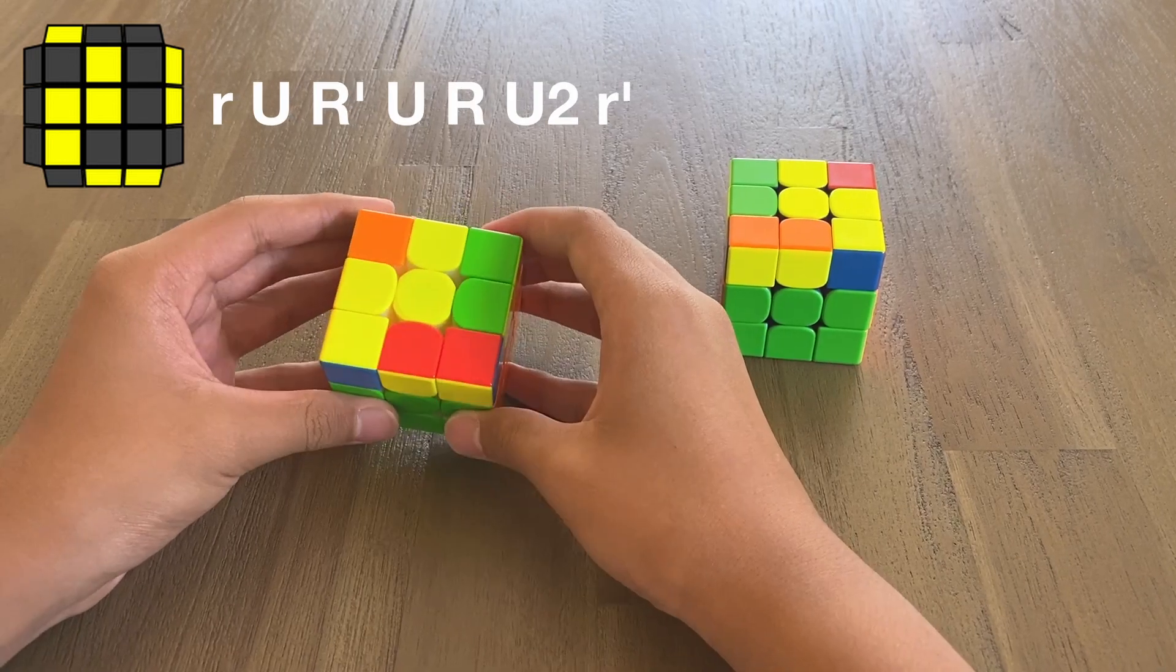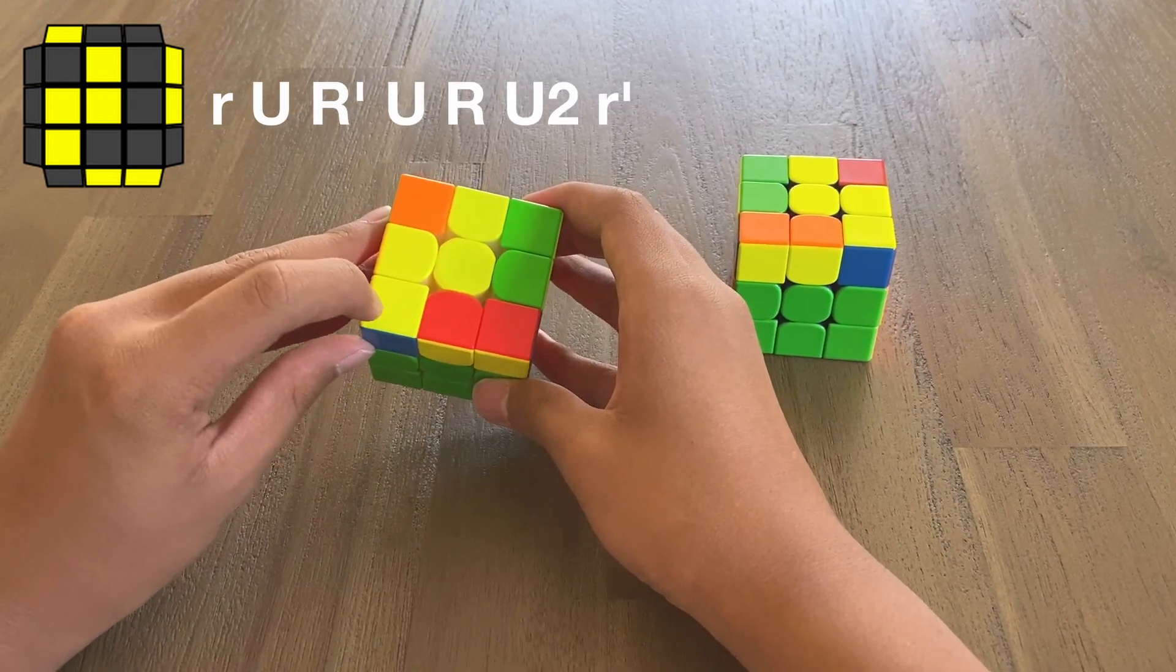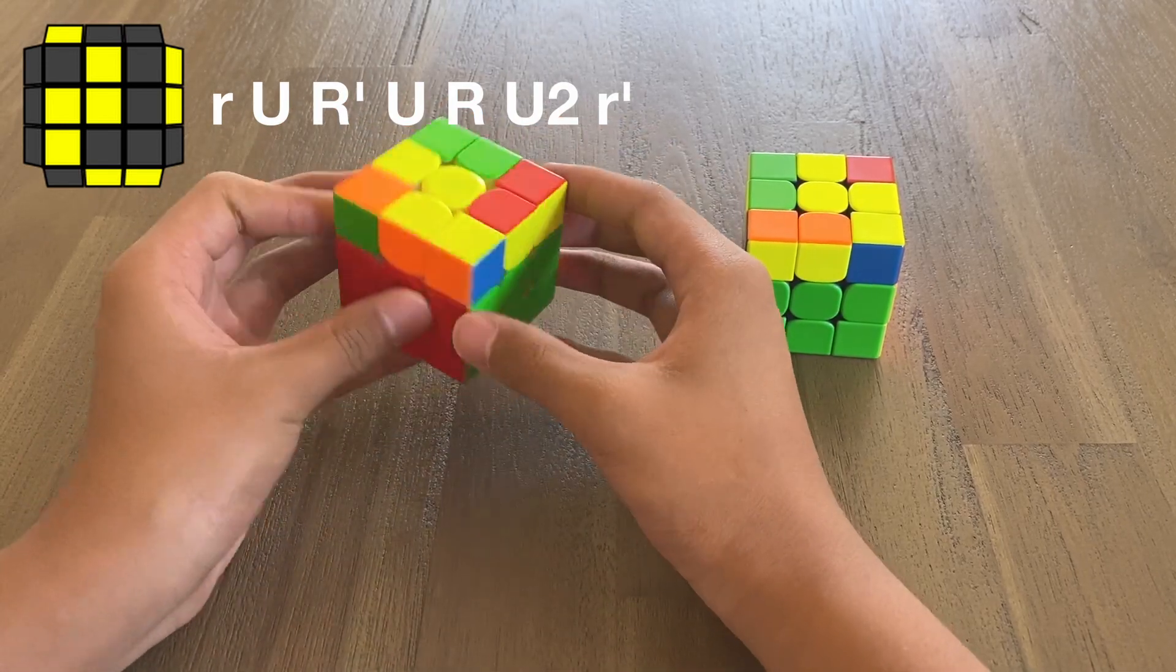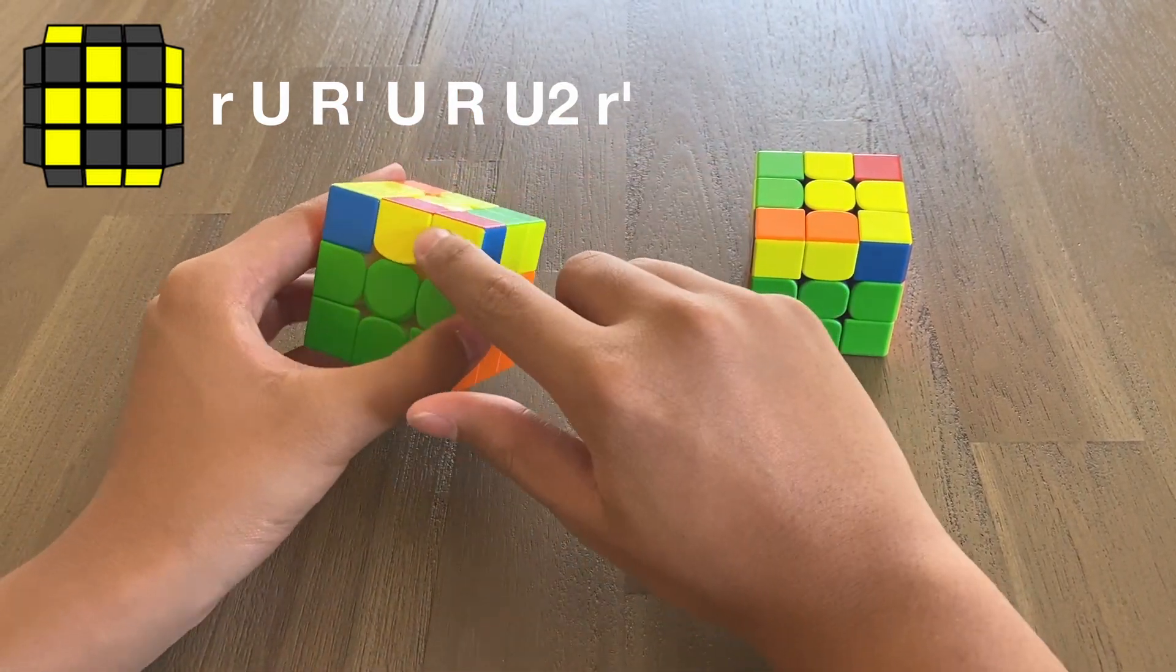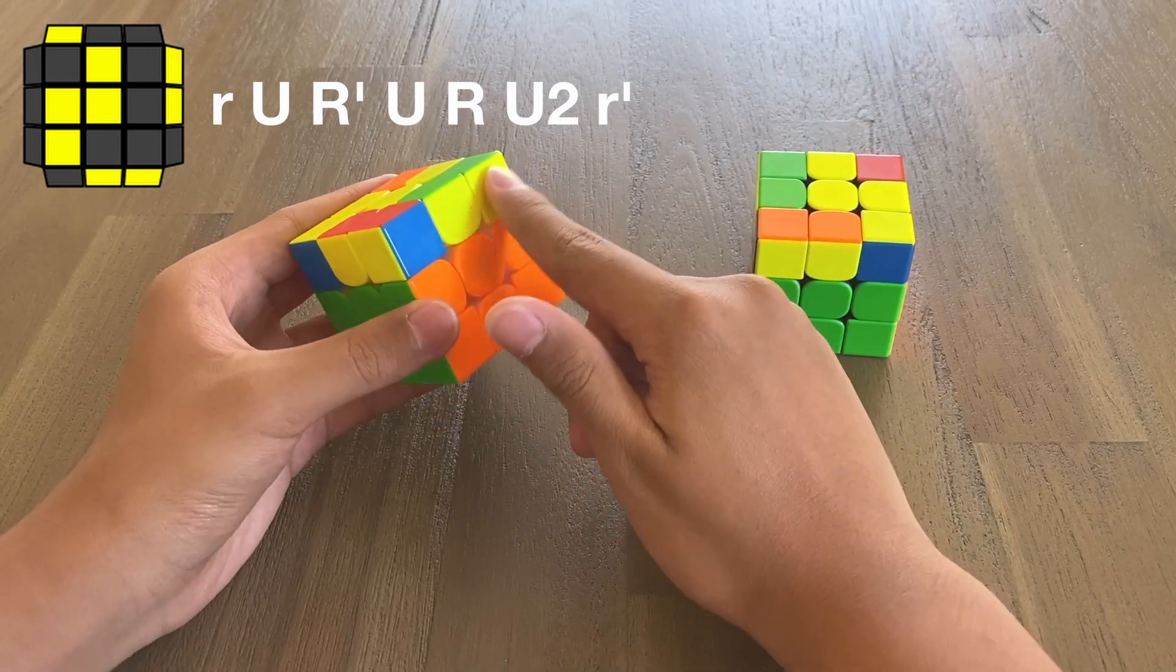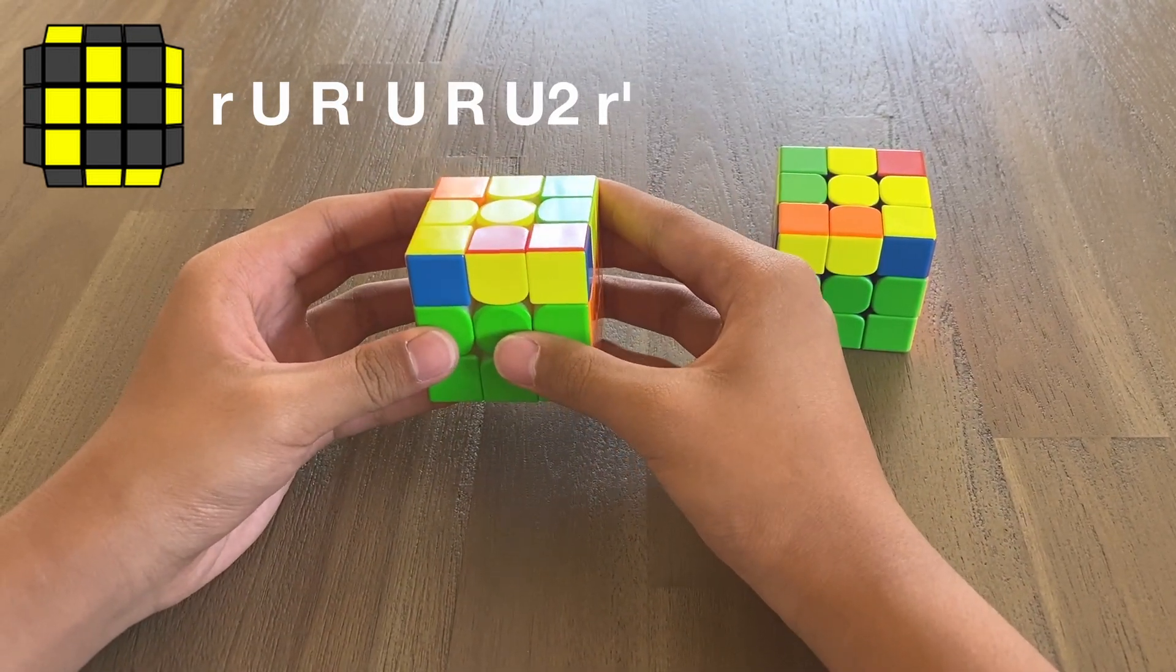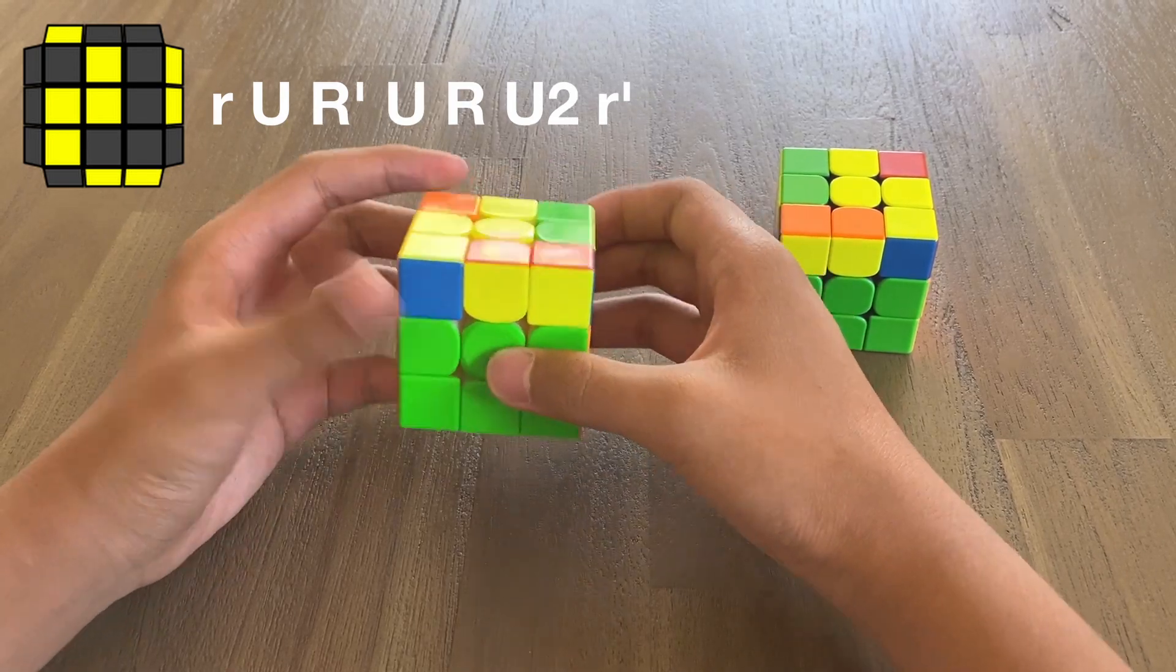The first case I'm going to talk about is something like this. You have the small S shape, or as some people like to call it the Z shape, and the specific one has the two bars or blocks here and here. The algorithm goes something like this. It's basically a sune, except some of the moves are switched into wide moves.